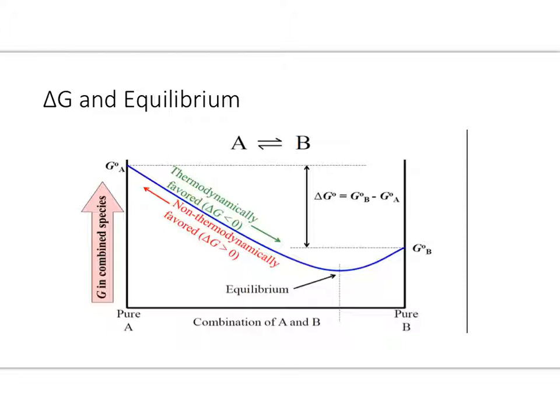All right, so let's take a look at this graph. Let me see if I can explain it to you. We're going to start our reaction with mostly reactant A, and this is where we're starting here, at pure A. So the delta G, the free energy combined in both species. Now remember this equation: our delta G is going to be the products minus the reactants.